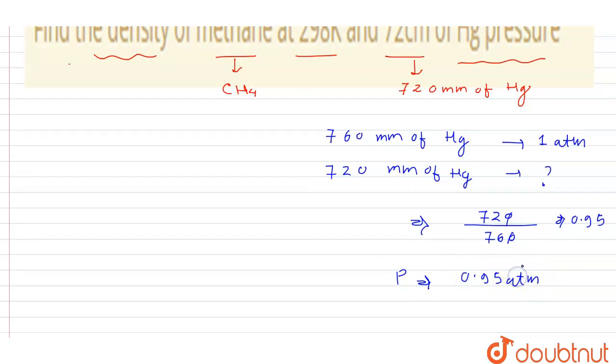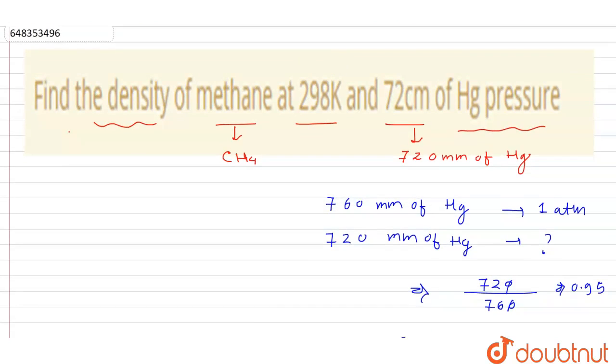Now we have to calculate the density. We know that the ideal gas equation is PV = nRT, where P is the pressure, V is the volume, n is the number of moles, R is the universal gas constant, and T is the temperature in Kelvin. We know that moles equals mass divided by molecular weight.